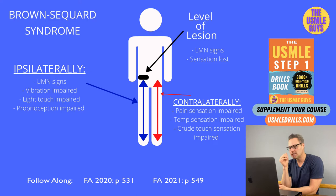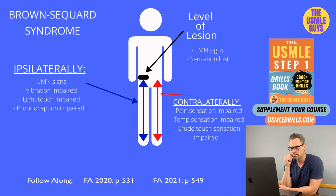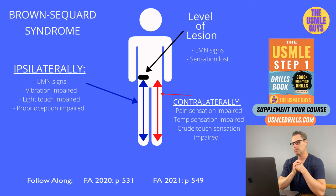Those two findings occur at the level of the lesion ipsilaterally. But below the level of the lesion, we'll see upper motor neuron signs from corticospinal tract damage, as well as a loss of vibration sense, proprioception, and light touch — due to damage to the dorsal columns.